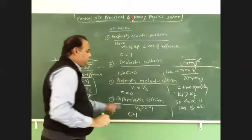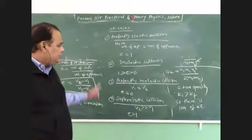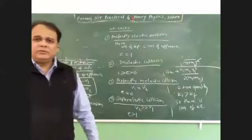E is greater than 1. So, these are the four values of coefficients of restitution. Okay? So, this is the work power energy.